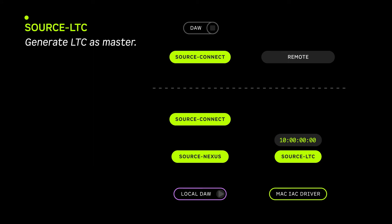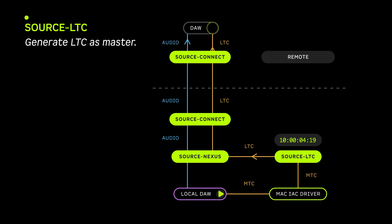If you want to be the TC master and have the remote end slave to you, you will need to send MTC from your DAW to Source LTC. Source LTC outputs LTC to either an audio driver, Source Nexus, or to a hardware input. This timecode source can be picked up and sent to one leg of a stereo or multichannel Source Connect session.